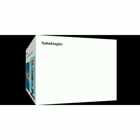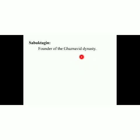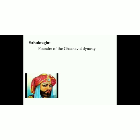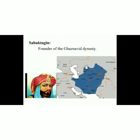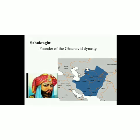The next word is Sabuktegin. Who was Sabuktegin? He was the founder of the Ghaznavid dynasty. The Ghaznavid rule in the subcontinent was established by Sabuktegin. He was the first ruler who laid the foundation of the Ghaznavid dynasty. In the chapter, we will be discussing his rule in detail.